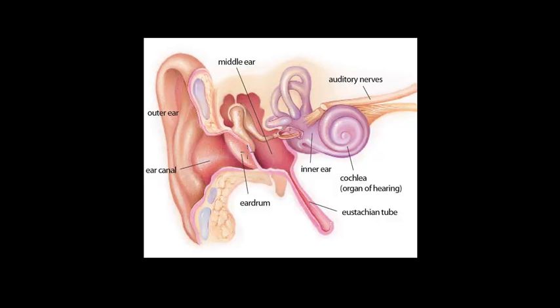Those sound waves hit the eardrum which vibrates and those vibrations are transferred through a series of bones to the inner ear which is made up of the cochlea which contains fluid and very sensitive hairs which detect vibrations and send electrical signals down the auditory nerve to your brain.